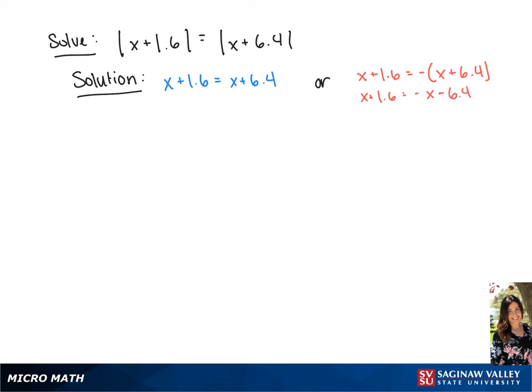For the first equation, we're going to start by subtracting 1.6 from each side, giving us x equals x plus 4.8. Now we're going to subtract x from each side, giving us 0 equals 4.8. Since this is not true, we have no solution for this first equation.